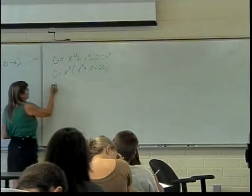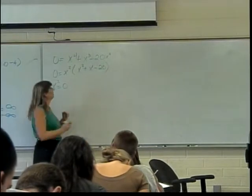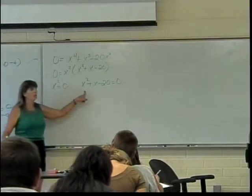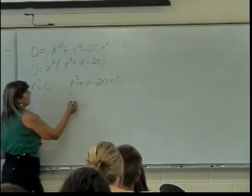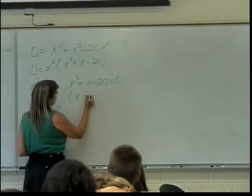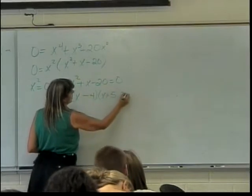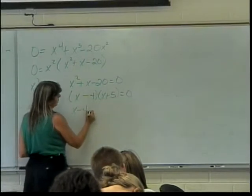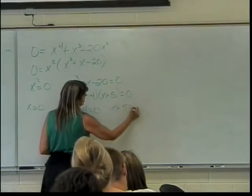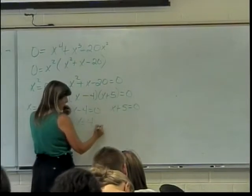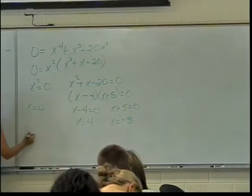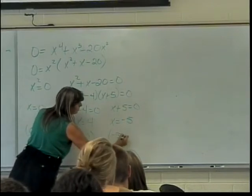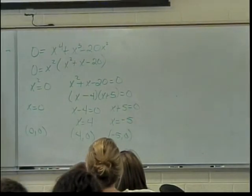So that means either x squared equals 0, or x squared plus x minus 20 equals 0. And somebody already told me this thing factors. So that's x minus 4 times x plus 5 equals 0. So this gives me x equals 0. This gives me x minus 4 equals 0, or x plus 5 equals 0. This will be x equals 4, and x equals negative 5. So my points are 0, 0, 4, 0, and negative 5, 0.